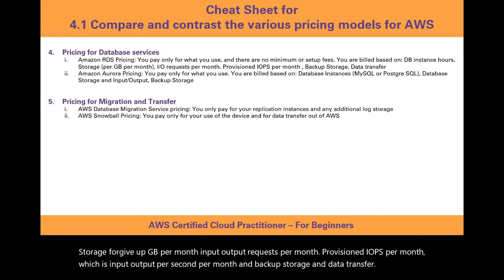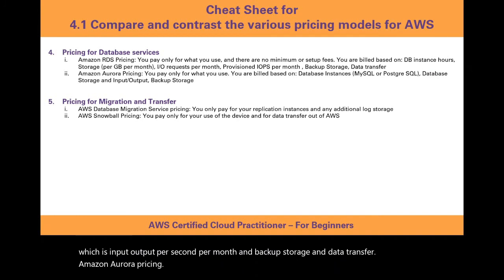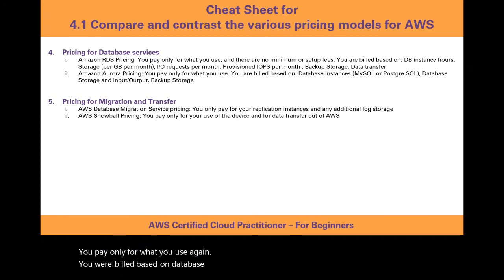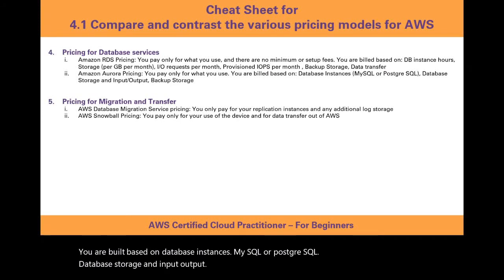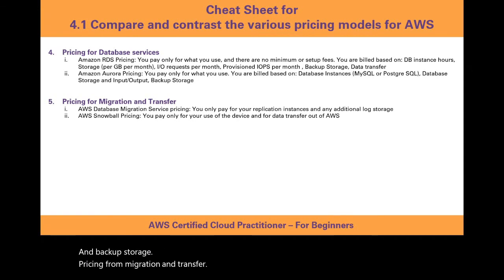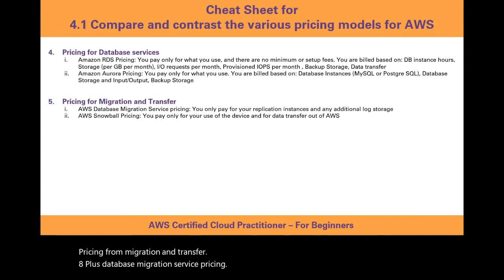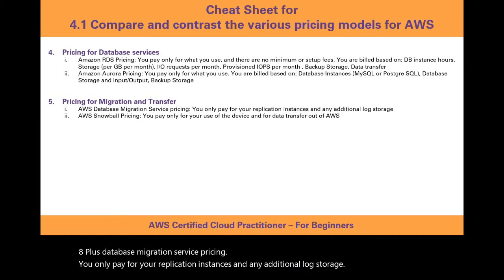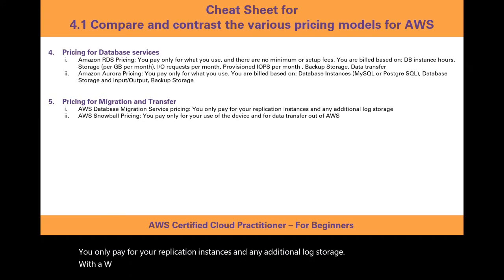Amazon Aurora pricing is pay-as-you-go, billed based on database instances (MySQL or PostgreSQL), database storage and I/O, and backup storage. For AWS Database Migration Service, you pay only for your replication instances and any additional log storage. With AWS Snowball, you pay only for use of the device and data transfer out of AWS.